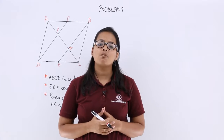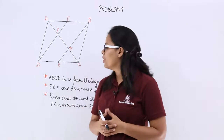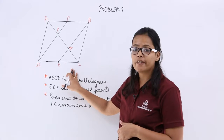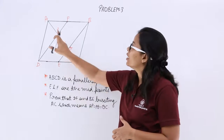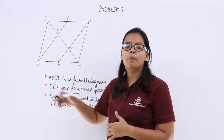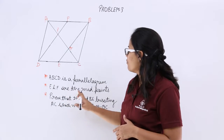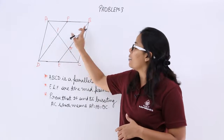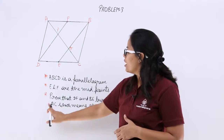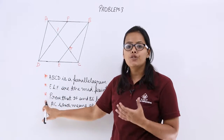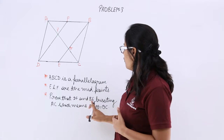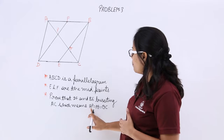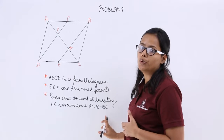Hello guys, let's discuss this problem which says ABCD is a parallelogram. You can see here this figure in which it has been told that this figure is a parallelogram. E and F are the midpoints of side AB and side CD. You need to prove that DF and BE trisect AC, which means you need to prove that AP is equal to PQ is equal to QC.